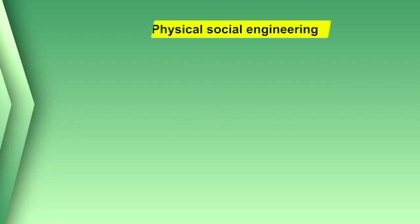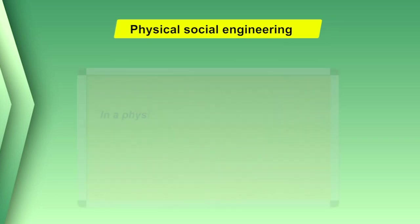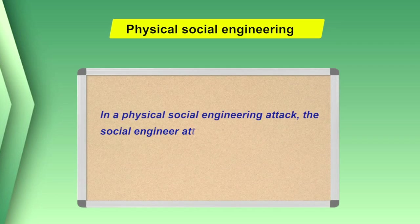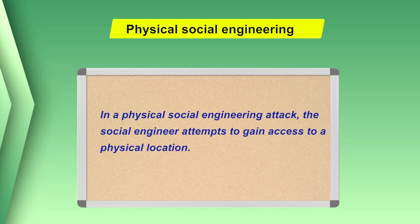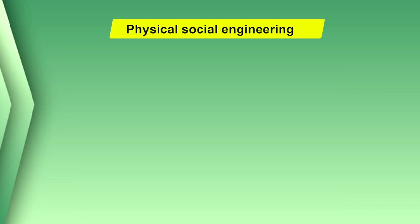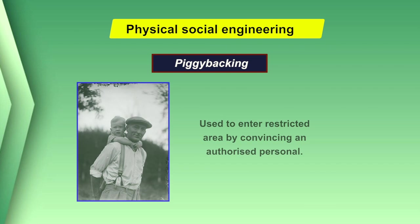Let us start with physical social engineering. In a physical social engineering attack, the social engineer attempts to gain access to a physical location. The attacker may do this via various methods. The first technique is piggybacking, which is used to enter a restricted area by convincing an authorized person.